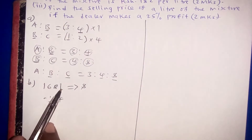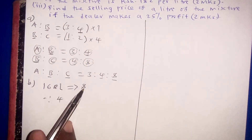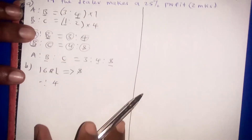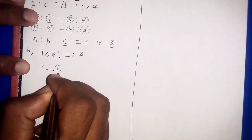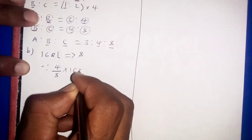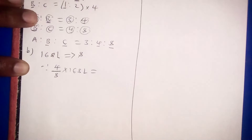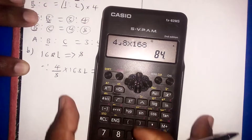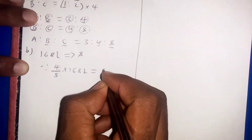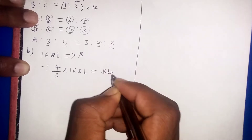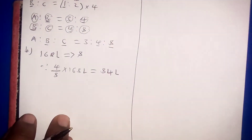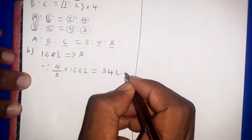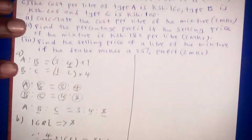If 168 liters represent a ratio of 8, what about a ratio of 4? That will be 4 divided by 8, times 168 liters, which gives us 84 liters. So 84 liters is the required amount of paint B.